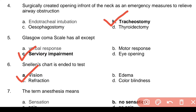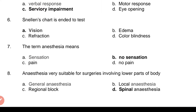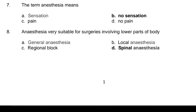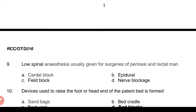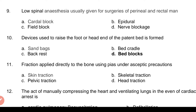Question 6: Snellen's chart is used to test — Answer: a. Vision. Question 7: The term anesthesia means — Answer: b. No sensation. Question 8: Anesthesia very suitable for surgeries involving lower parts of the body — Answer: d. Spinal anesthesia.